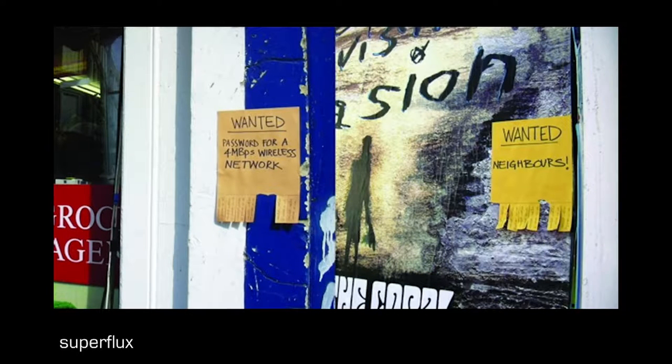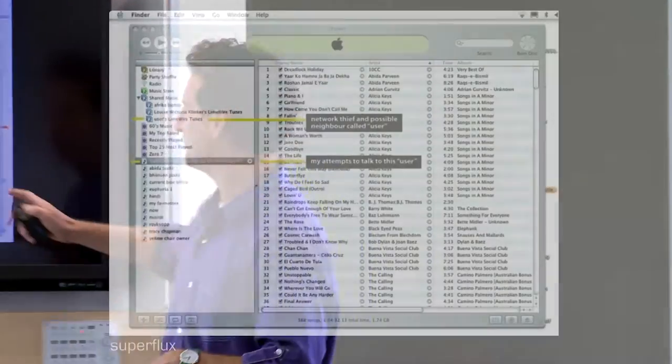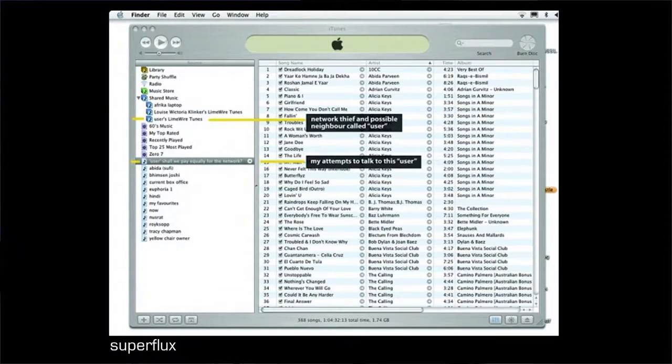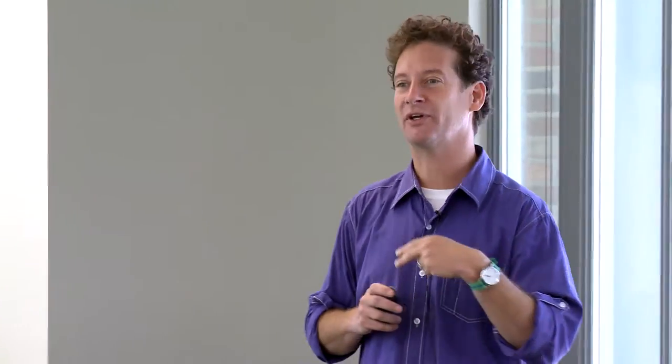The only way she had been able to make some contact beyond trying to say hello to people on the street was she left her own wireless network open at home. And there was someone who kept on accessing music through it, through their iTunes account. So she would make separate playlists for them. One was called Network Thief and Possible Neighbor Called User. And my attempts to contact this user, she was trying to share music with them based on the things that they listened to and liked, where she thought she might strike up a friendship. But recognizing that accessible wireless was one commodity, this is about 2006 in London.